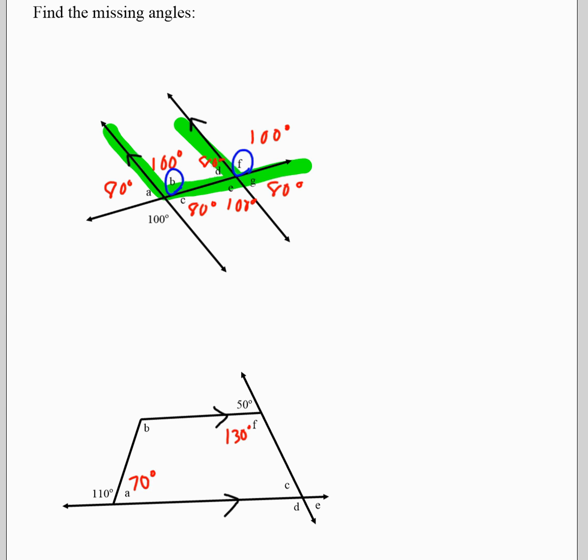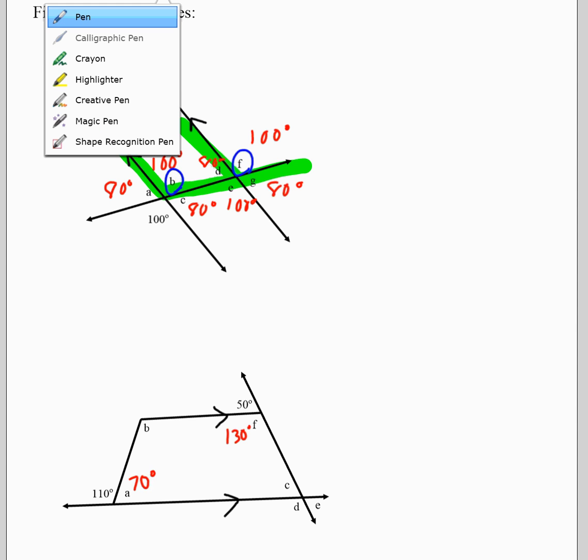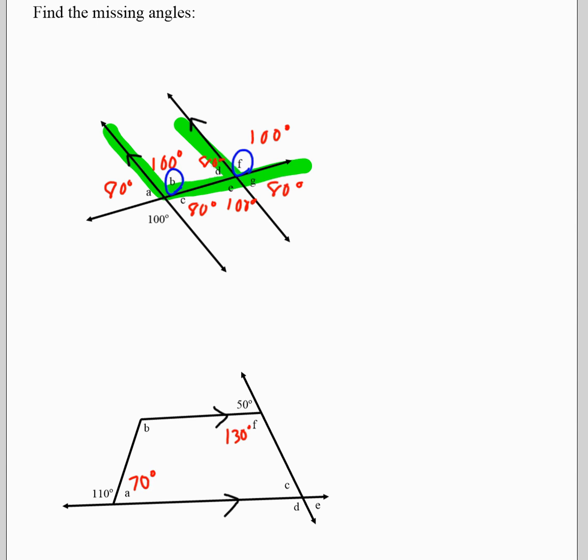Now we're a little bit stuck. So what could we do? Well, we know we have parallel lines. So what we need to do is try to find some patterns using those lines. For example, right here is a Z pattern. What that tells us is that tells us that B and 110 are alternate angles. So B must be 110.